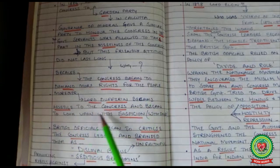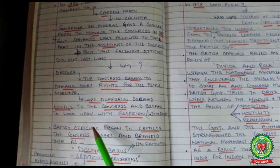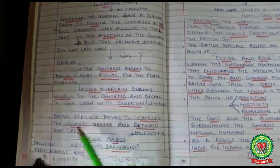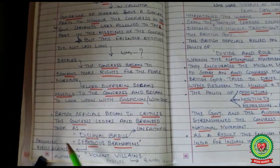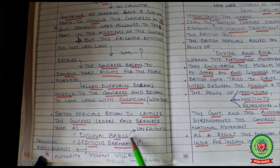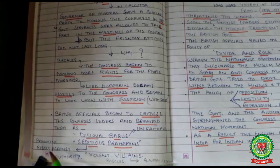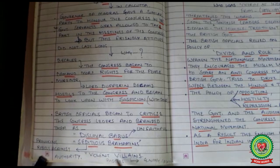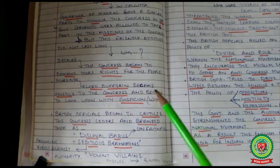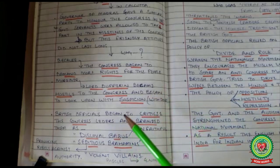Lord Dufferin became hostile to the Congress and began to look upon it with suspicion. British officers began to criticize the Congress leaders and branded them as disloyal Babus — meaning unfaithful — seditious Brahmins — provoking rebellion against authority — and violent villains, meaning they were treated as rascals or enemies.